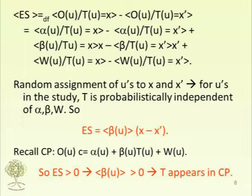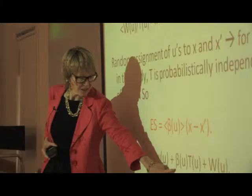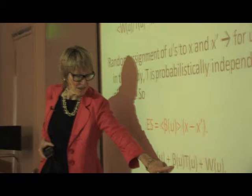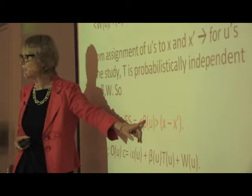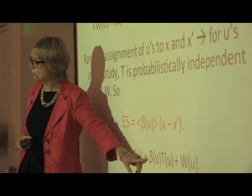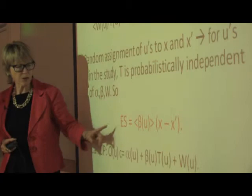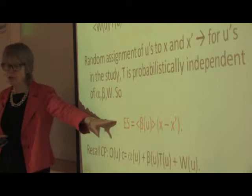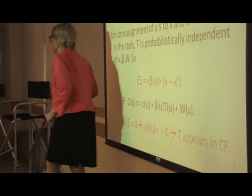If the effect is non-zero, then this term has really got to be there in the equation. You can't possibly get a non-zero value here unless T really does figure in the causal principle governing the production of the outcome in the study population. So that's what you can conclude from finding a positive effect size — that this treatment really does appear positively in the causal principle that governs the production of the effect.